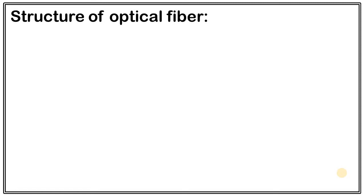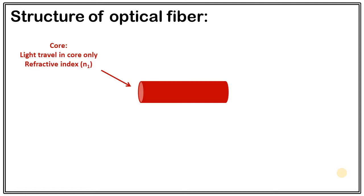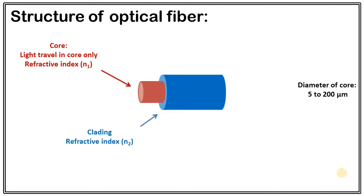Now let's discuss the structure of optical fiber. The major part is called the optical core, which is made of dielectric medium — light mainly travels in the core. It is covered by a surface called cladding, whose refractive index is less than that of the core. Cladding increases the chances of total internal reflection, which is the principle optical fiber uses to guide light. An outer layer called the jacket is there to protect the entire structure of core and cladding.